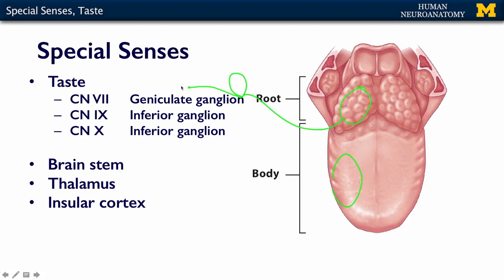From these ganglia, the fibers project via the cranial nerve back to the brainstem, where they synapse in specific areas. The information then travels from the brainstem to the thalamus and then up to the cortex — specifically to areas of the thalamus and then to the insular cortex.